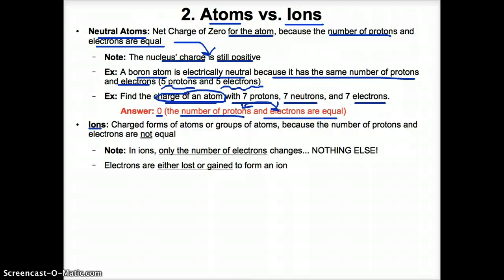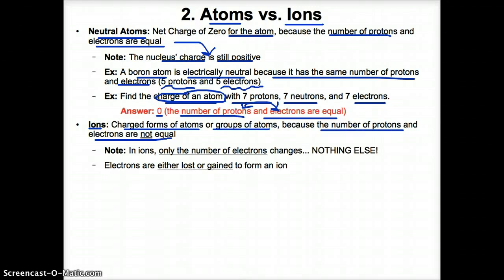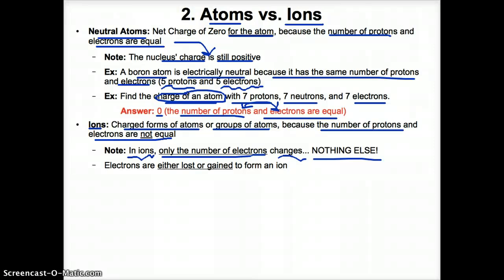Ions are charged forms of atoms or groups of atoms. The reason why the atom or group of atoms is charged is because the number of protons and electrons are not equal. In ions, only the number of electrons changes — nothing else. You only change the electrons when you form an ion, so the number of protons and electrons are not equal because only the electrons change to throw that charge off balance.